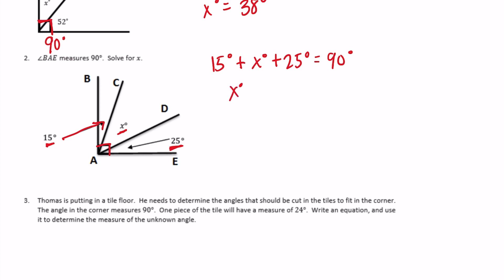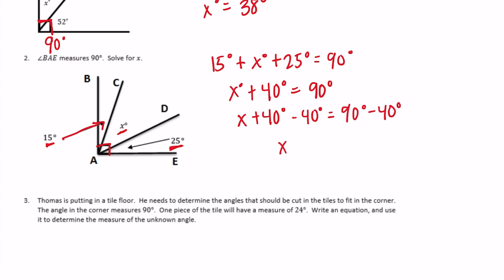We can combine some terms. x degrees plus — since 15 degrees plus 25 degrees equals 40 degrees — we have x degrees plus 40 degrees is equal to 90 degrees. To get x alone, we do the opposite of plus 40, which is minus 40. So x plus 40 minus 40 equals 90 minus 40, giving us x equals 50 degrees.